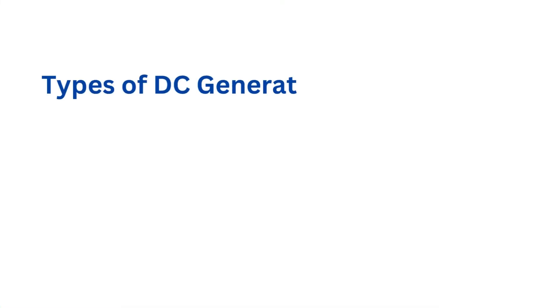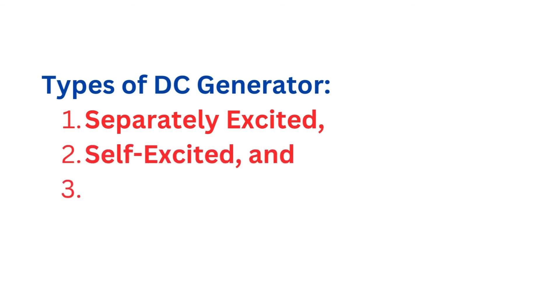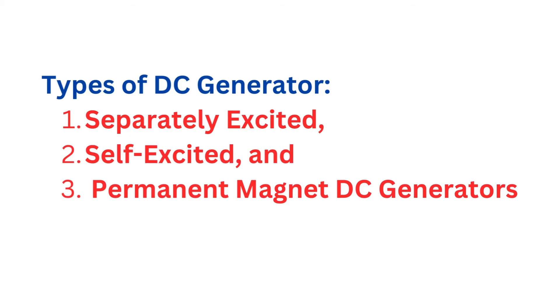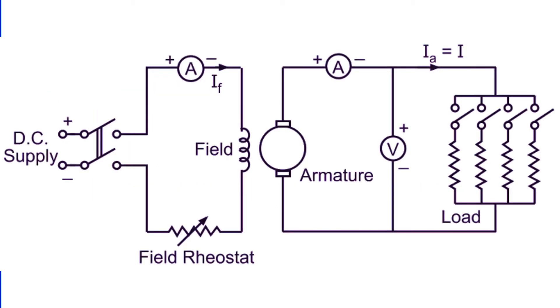Primarily, DC generators are classified based on their method of excitation into three types: separately excited, self-excited, and permanent magnet DC generators. Firstly, separately excited DC generators feature an external power source used to energize their field winding. This setup allows for excellent control over the output voltage, making these generators ideal for applications requiring stable voltage, such as in laboratory testing equipment and precision machine tools.